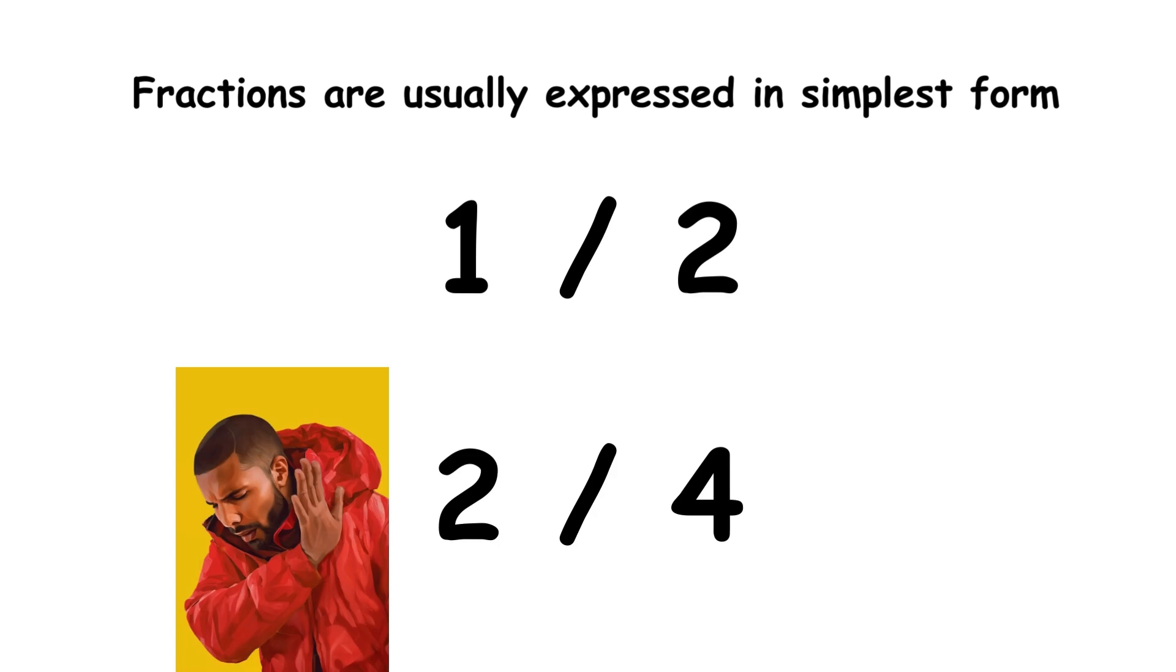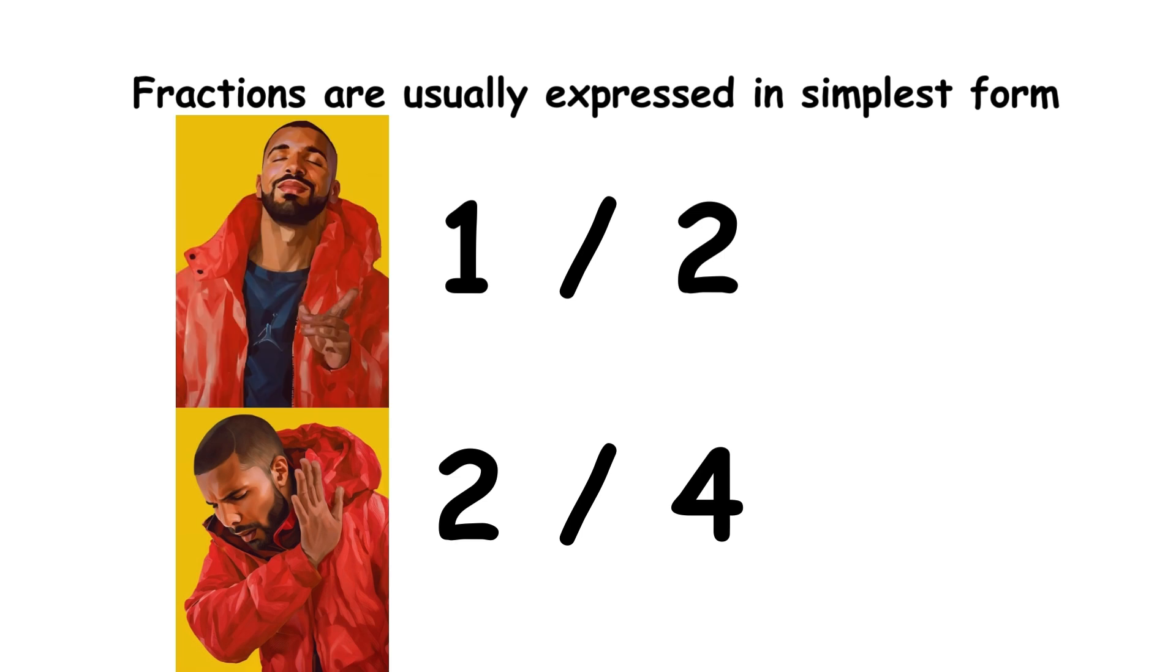Fractions are usually expressed in simplest form, where the numerator and denominator have no common factors other than 1. 2 over 4 is not in simplest form, due to the common factor of 2, but 1 over 2 is.